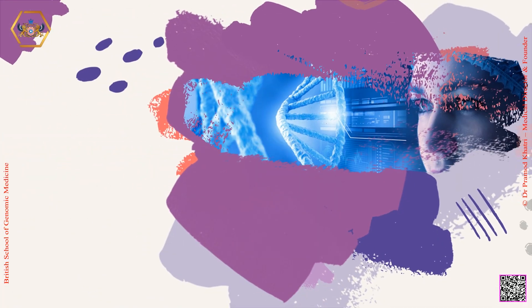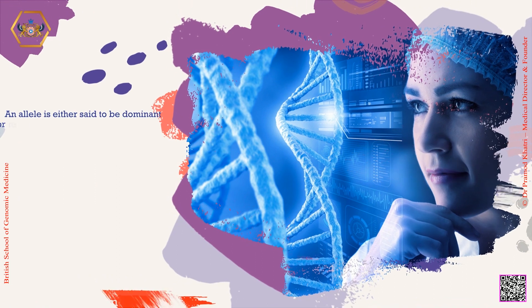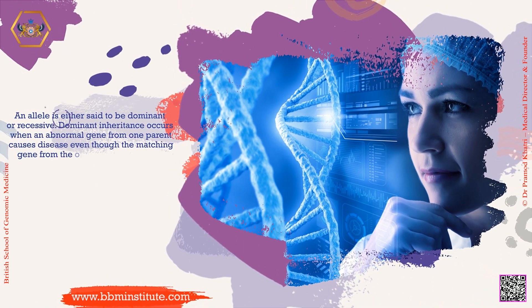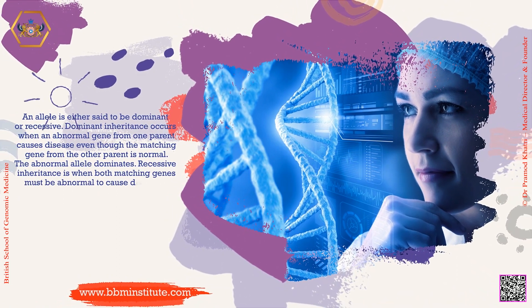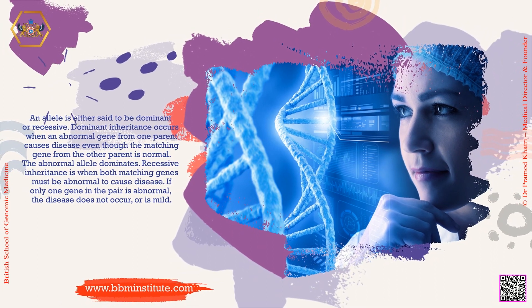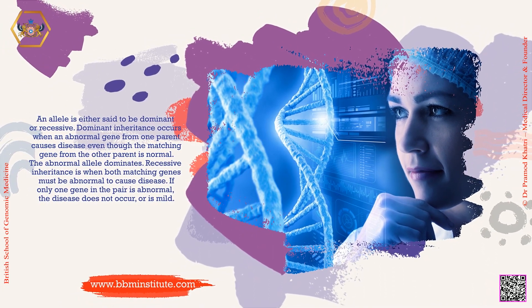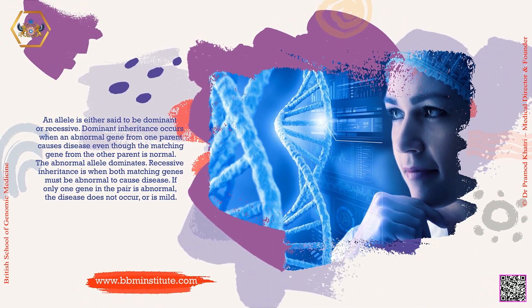An allele is either said to be dominant or recessive. Dominant inheritance occurs when an abnormal gene from one parent causes disease even though the matching gene from the other parent is normal — the abnormal allele dominates. Recessive inheritance is when both matching genes must be abnormal to cause disease. If only one gene in the pair is abnormal, the disease does not occur, or is mild.